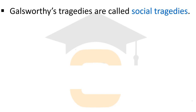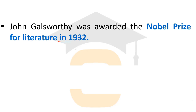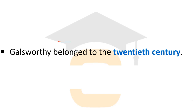John Galsworthy was awarded the Nobel Prize for Literature in 1932 — the highest prize in the field of literature. It was given to him because of his contribution and the works he wrote in the field of novels and drama. Galsworthy was a novelist and playwright of the 20th century, and in 1932 he received the Nobel Prize, cementing his place as one of the great dramatists.